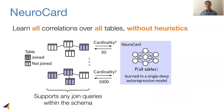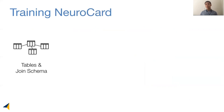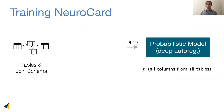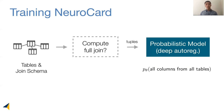After learning NeuroCard on data, NeuroCard can be used to estimate any join queries we can ask on a given schema. Given a set of tables and their join relationships, which we call the schema graph, our goal is to produce training tuples from their full join and feed them into a probabilistic model for training. A straw man approach is to compute the full join and then take the training tuples out.